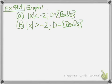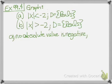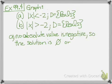Graph the absolute value of x is less than negative 2, where the domain is the real numbers. If it's less than negative 2, remember you can't have an absolute value less than a negative number — there are no absolute values that are negative. Therefore, the solution set is the empty set. You can write it as 'no solution' or as two empty brackets.